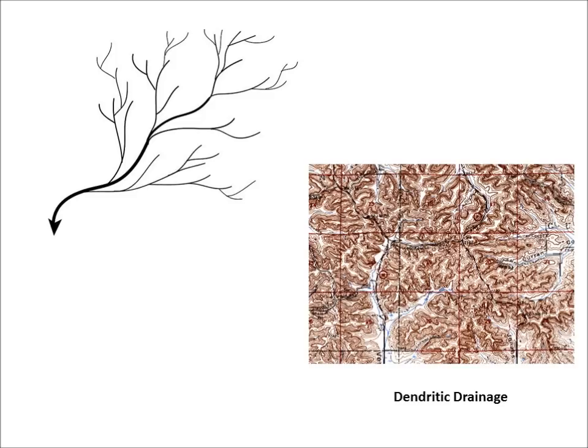That's how you get the branching effect that's so common in a lot of surface drainage systems, especially in the Sierras.